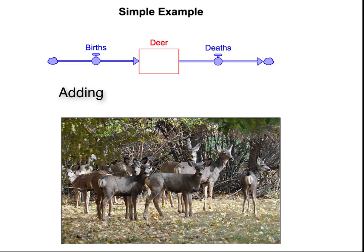How many are born depends on two factors: how many deer there are and the birth fraction — that is, the percentage of deer that will give birth in any given year. How many die depends on two factors: how many deer there are and the average lifespan.